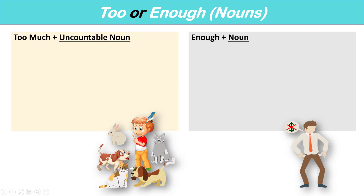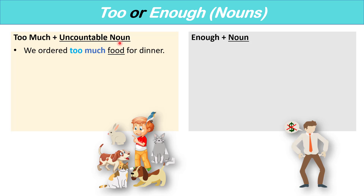Now let's look at 'too' or 'enough' with nouns. With nouns, we use 'too much' plus an uncountable noun. For example: we ordered too much food for dinner — food is an uncountable noun, so we say 'too much' and not 'too many.' He put too much sugar in my tea. This means we have more food than we need, and someone put more sugar than wanted in the tea.